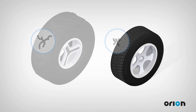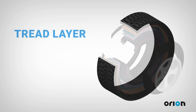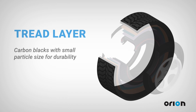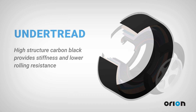With that in mind, let's take a closer look. The tread layer makes contact with the road. It contains carbon blacks with small particle size, which make the tire more durable. The under tread makes the tread stick better to the internal layers and further enhances the tread. The high structure carbon black provides stiffness and lower rolling resistance.